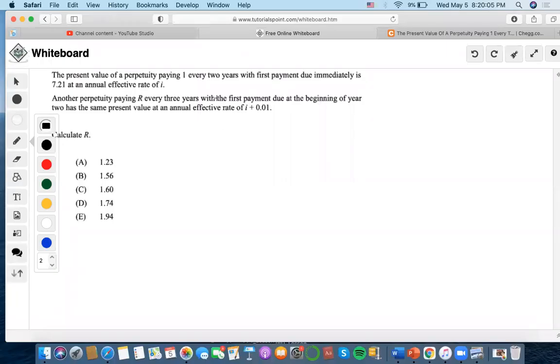For this problem, the present value of a perpetuity paying 1 every two years with the first payment due immediately, given an annual effective rate i. We have to convert it to a two-year effective rate, and we find j which equals (1+i)² minus 1.